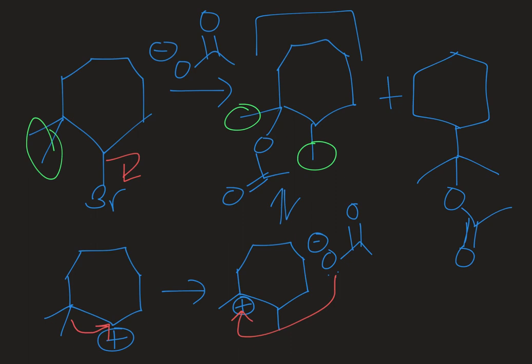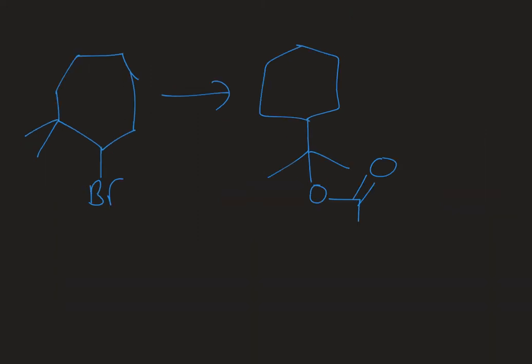Now let's go to the next slide and we'll see how the ring contraction occurs. Again the first step in this SN1 reaction is going to be my leaving group leaving to form an initial carbocation and then a rearrangement will occur from there.